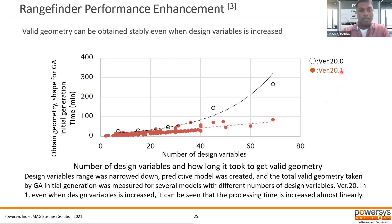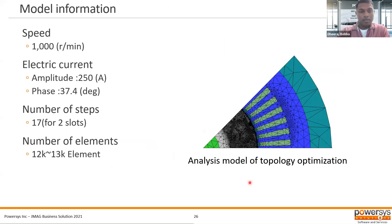This has been recently added to version 20, and there's already been significant improvement with version 20.1. The black curve here is the time it took for geometry shape for genetic algorithm initial generation using the range finder, and in version 20.1 it's quite improved. The x-axis is the number of geometry variables defined. For the model information for topology optimization: speed is 1,000 RPM, rated current is 250 amps, and the current phase angle is 37.4 degrees. We're using 17 steps — 17 divisions for one cycle — and the number of mesh elements is between 12,000 to 13,000 elements.